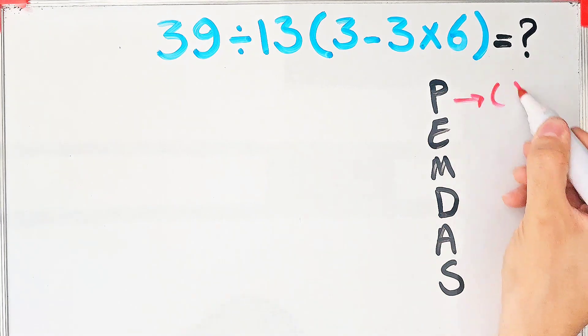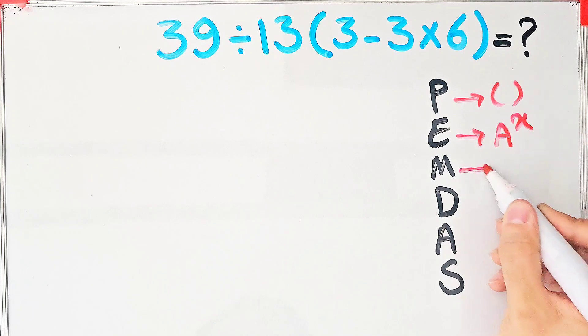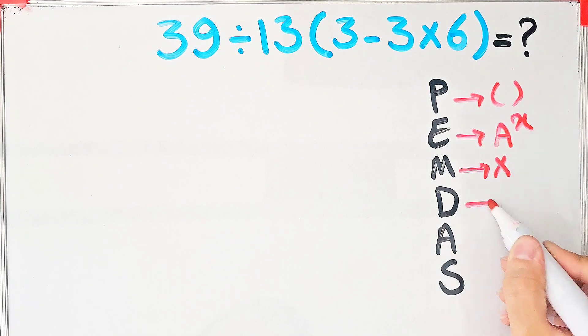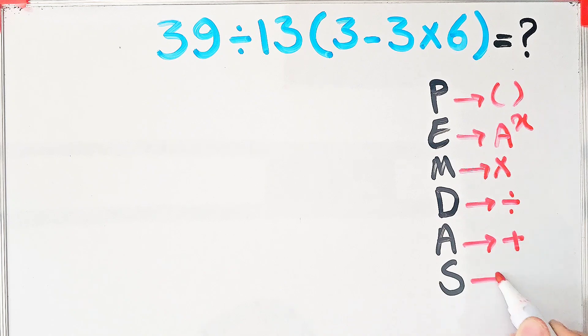In this rule, P stands for parentheses, E stands for exponent, M stands for multiplication, D stands for division, A stands for addition, and S stands for subtraction.